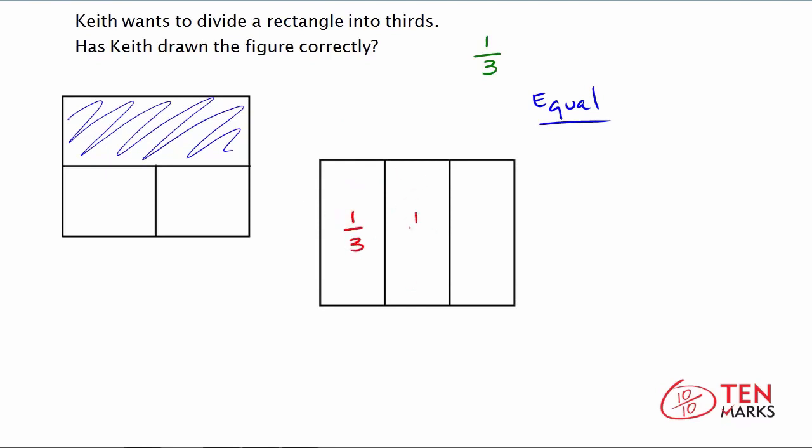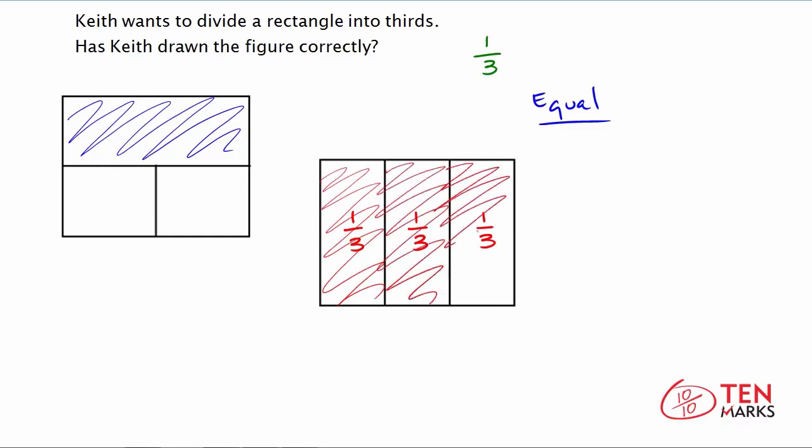So now, these parts all represent one third of the total rectangle. So if you're just looking at this, then you have one third. If you're looking at both of these, you have two thirds. And lastly, if you're looking at all three, you have three thirds, or the whole.